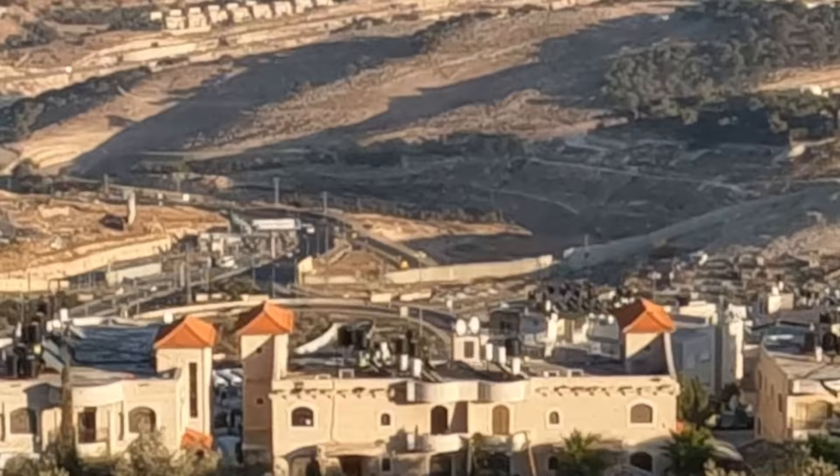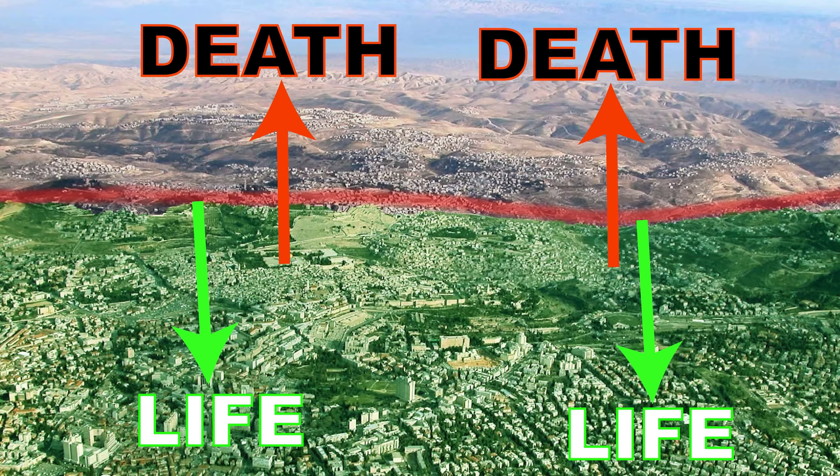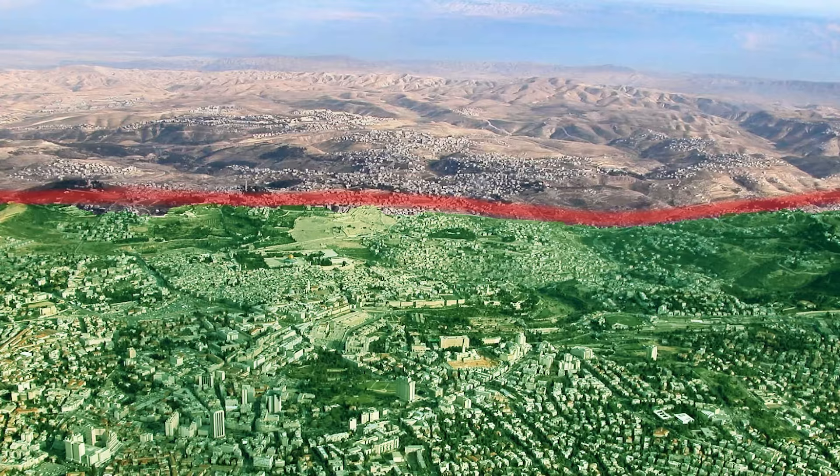There is more to the Mount of Olives than we even realize. The Mount of Olives creates a line between death and life — everything east of it is dead, and everything west of it is alive. This is a powerful symbol and a reminder of the future events that will take place on the Mount of Olives.